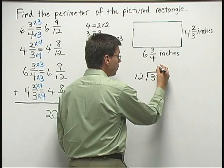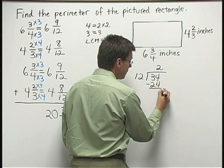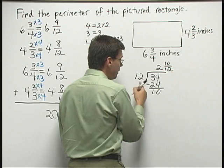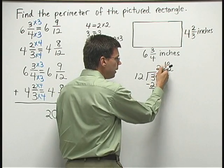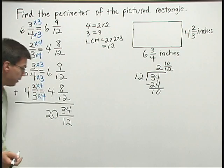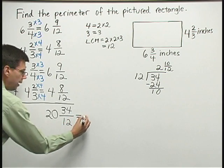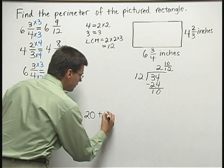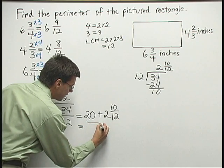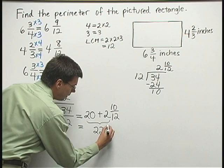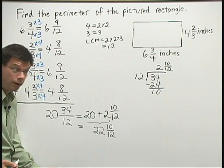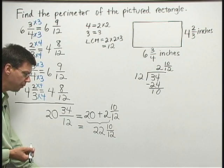Twelve goes into thirty-four two times. Two times twelve is twenty-four. Subtract, I get ten. I can write my remainder ten over the number in front, twelve. So I have two and ten twelfths. That's equal to the thirty-four twelfths that I have right here. So twenty and thirty-four twelfths I can write as twenty plus two and ten twelfths. That's the same as adding the twenty and two. Twenty-two and ten twelfths.